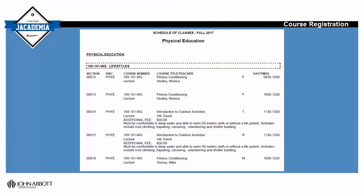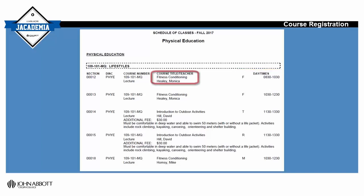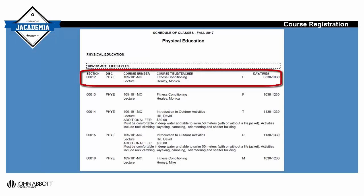The schedule of classes will tell you three very important pieces of information: when the course is being taught, who is teaching the course, and the section number related to a specific course. This number is what identifies the course, teacher, and time combination. Each semester there are multiple sections of the same course being taught.